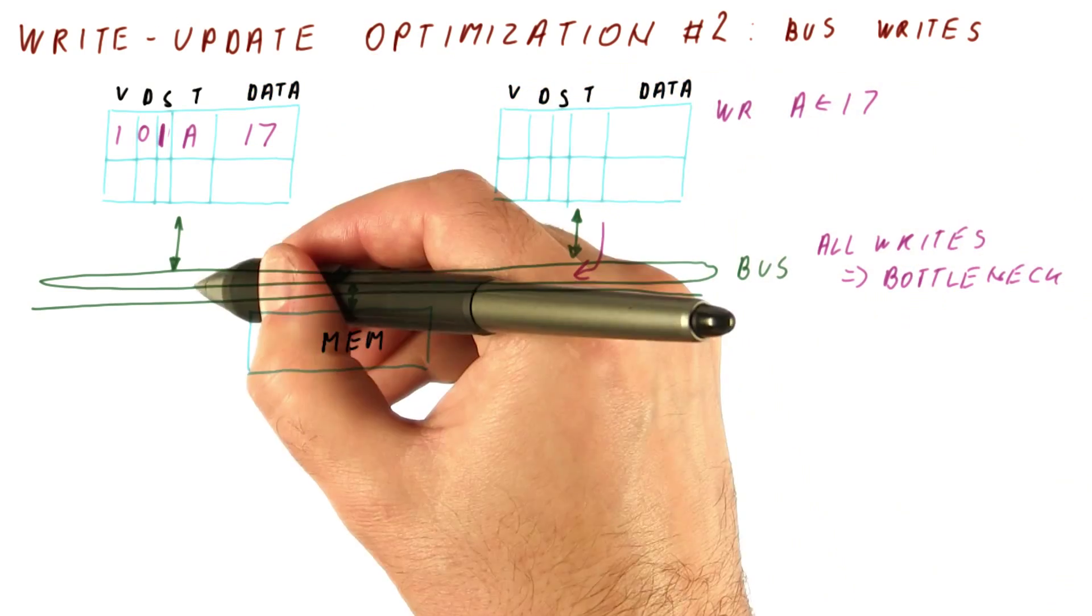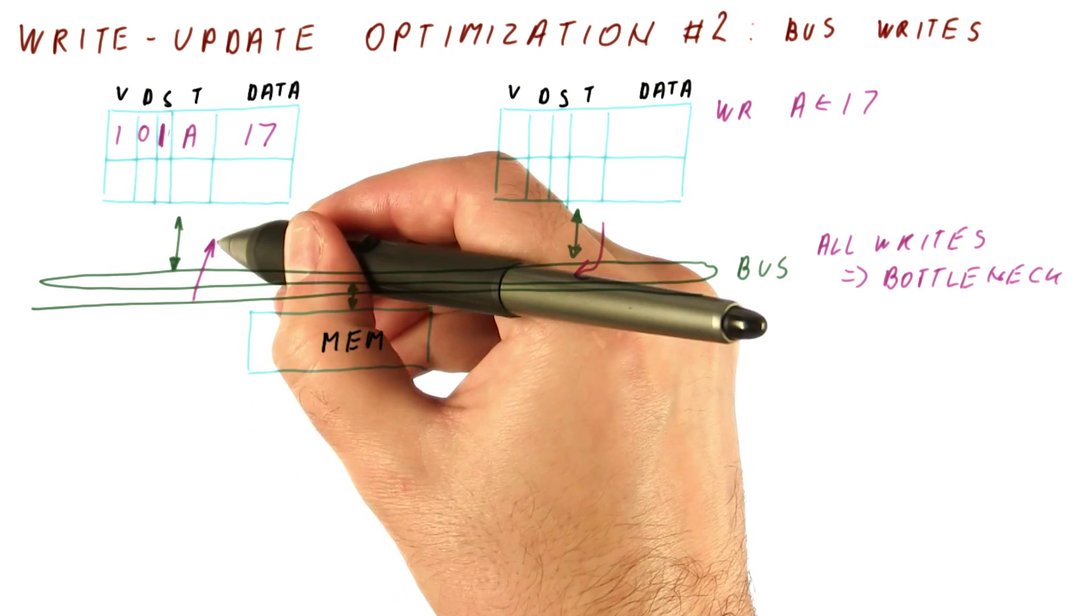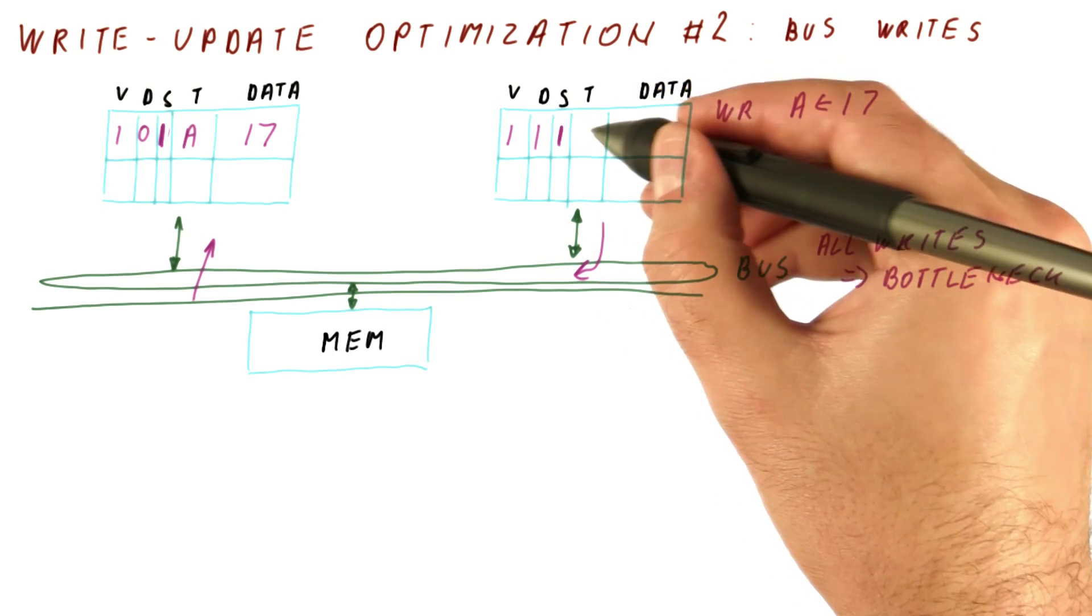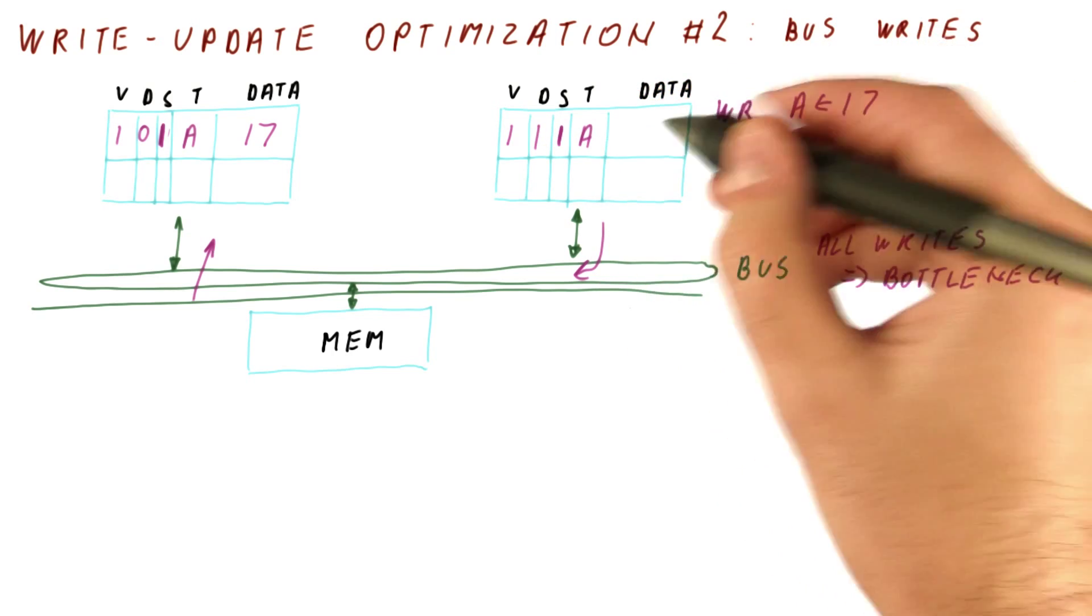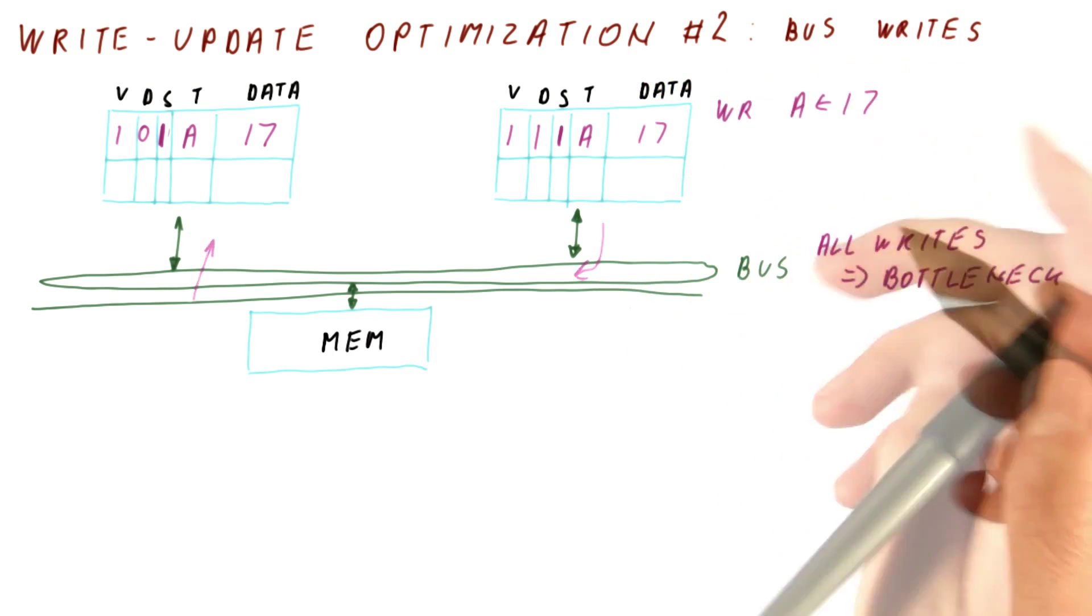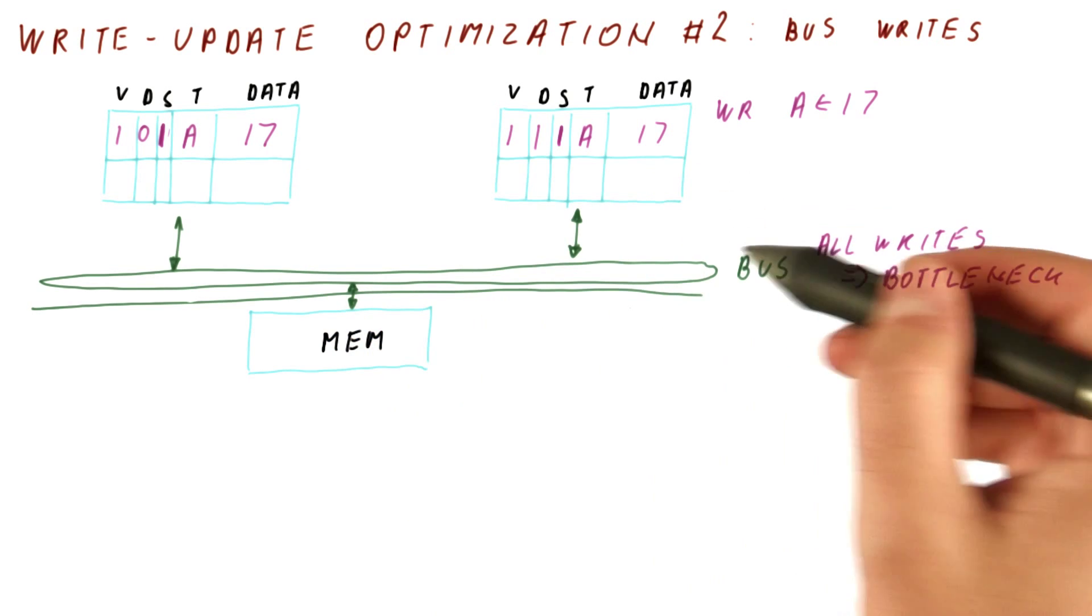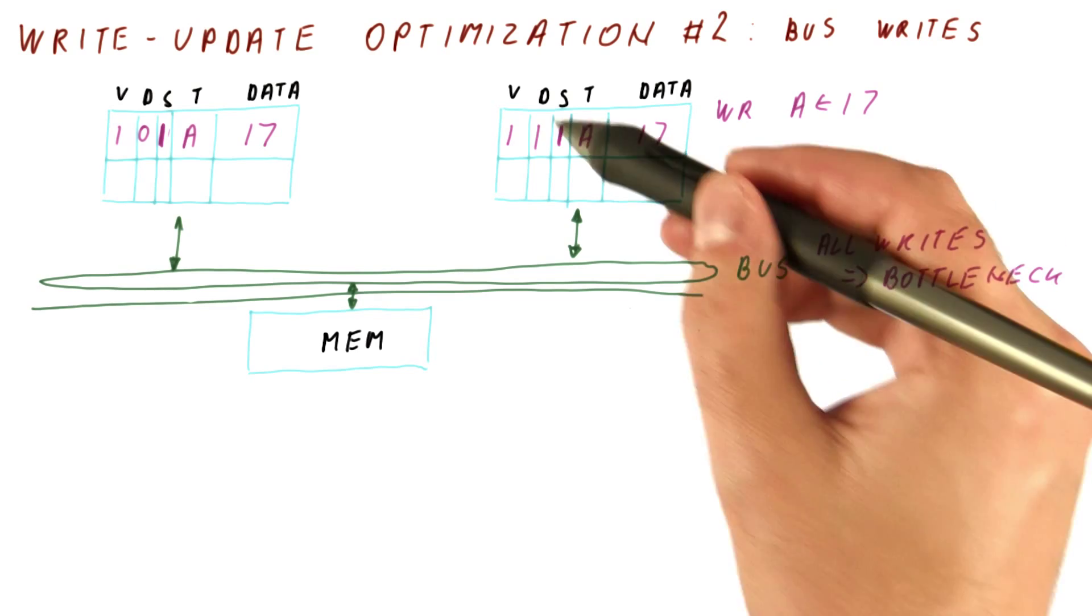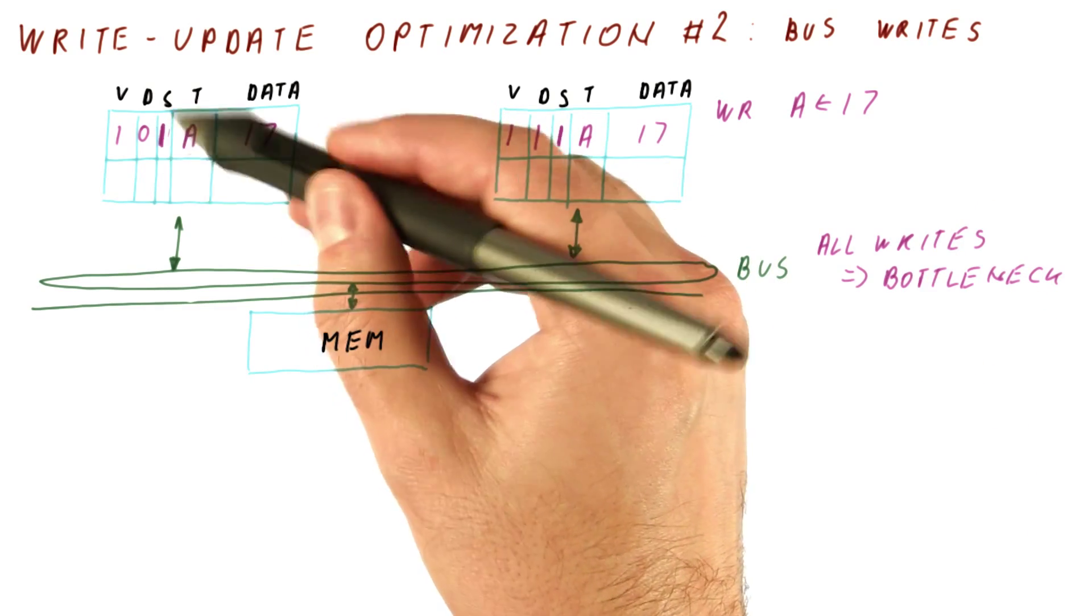it updates the value. Third, it pulls this line to 1, so that this cache knows the block is shared. And now it has the block in the dirty state with a value of 17. So far, this has behaved exactly as it should without the shared line and without the shared bits. So what's the benefit of the shared bits?